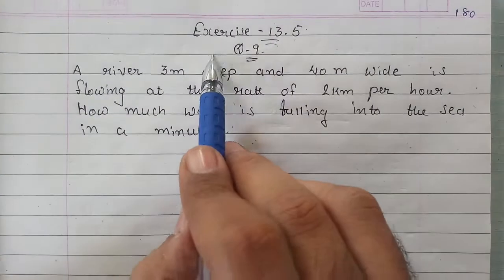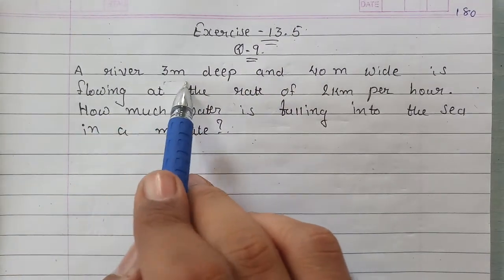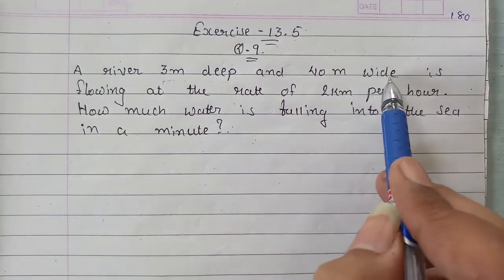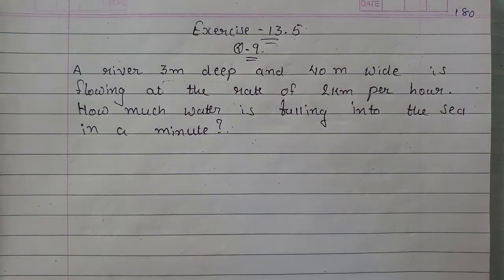Next, we will continue with Exercise 13.5, question number 9. A river 3 meter deep and 40 meter wide is flowing at the rate of 2 kilometer per hour.